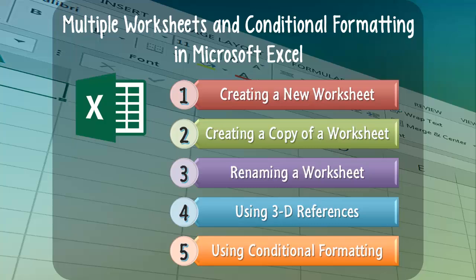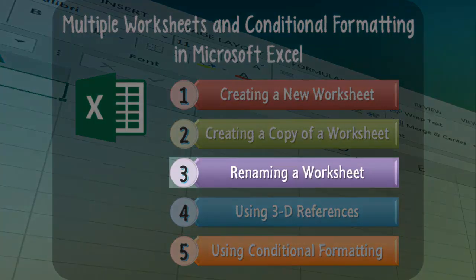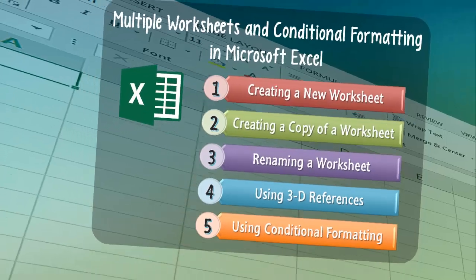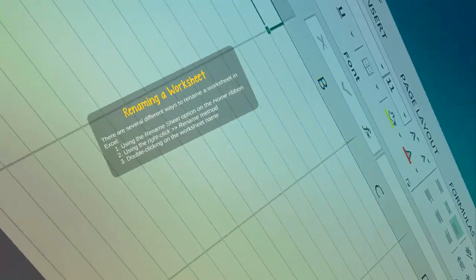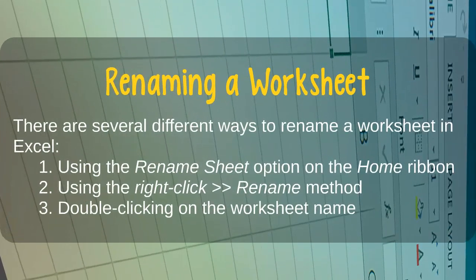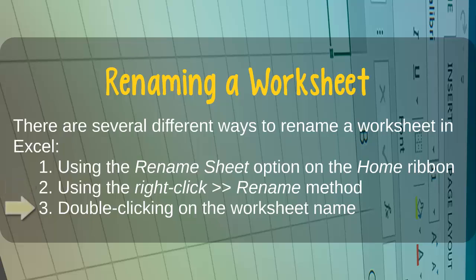Next, we'll learn a few different ways of renaming an Excel worksheet. There are several different ways to rename a worksheet in Microsoft Excel. Specifically, we can use the Rename Sheet option on the Home ribbon, we can use the right-click Rename method, or we can simply double-click on the worksheet name. Let's see examples of these three techniques.